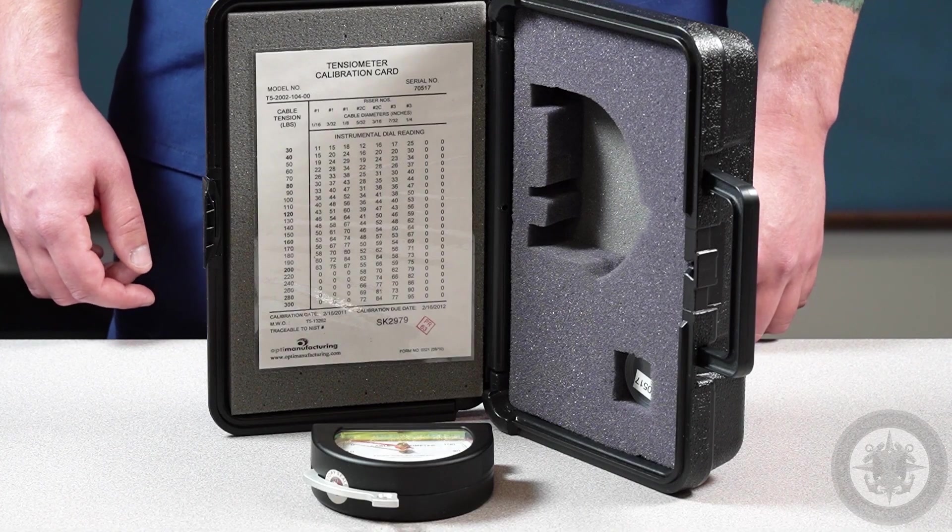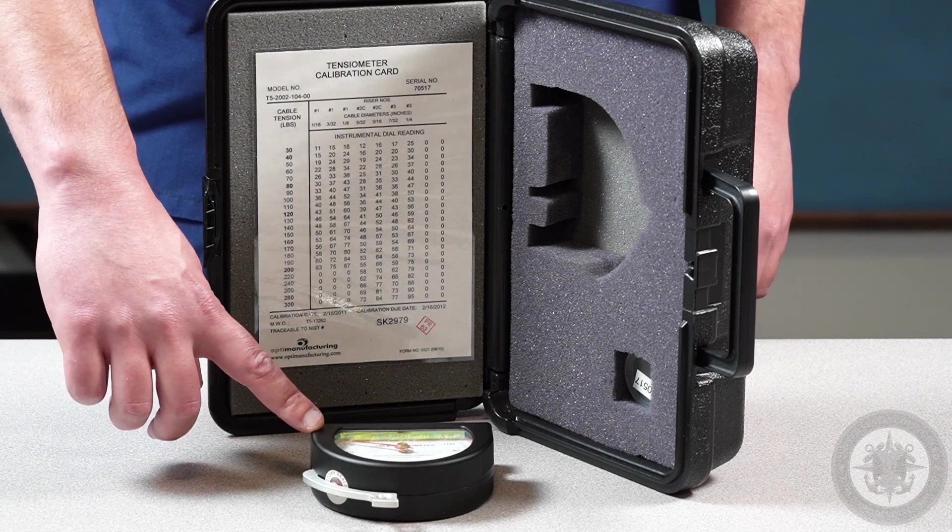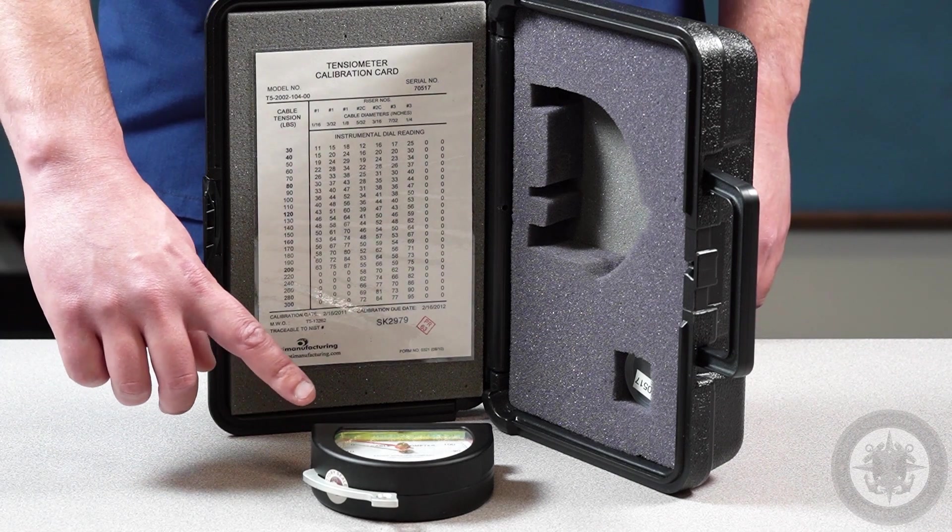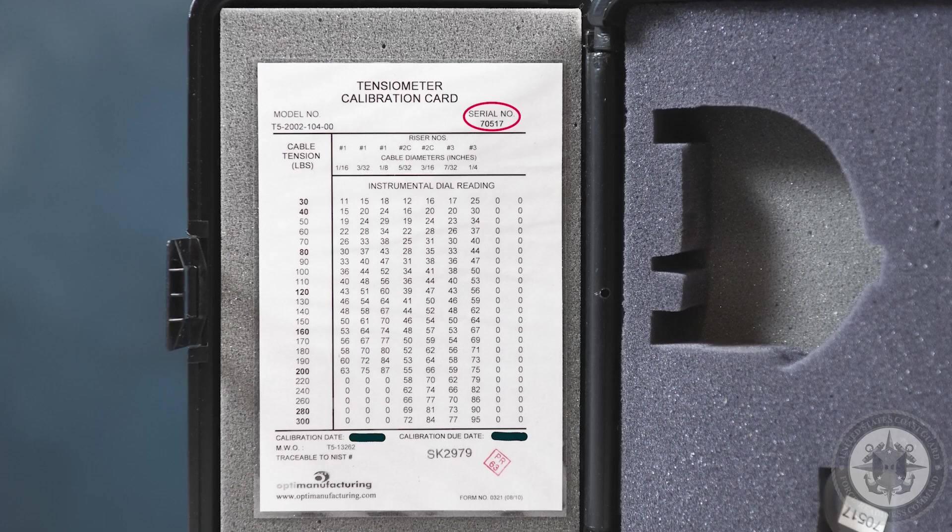Quick note before we get started, make sure that the T5 cable tensiometer calibration has not expired and also make sure that the cable tensiometer and cable tensiometer calibration card have the same serial number.